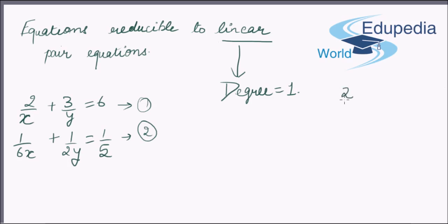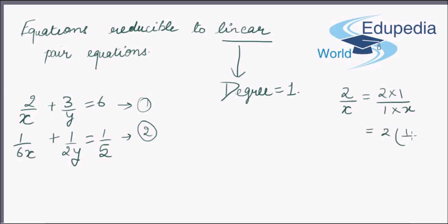Friends, if we look at 2/x, it can be written as 2 × (1/x). Similarly, 1/(6x) can be written as (1/6) × (1/x).